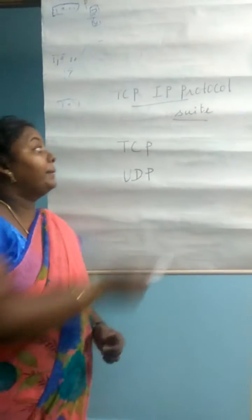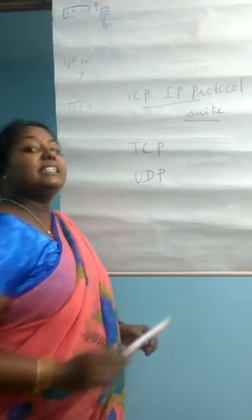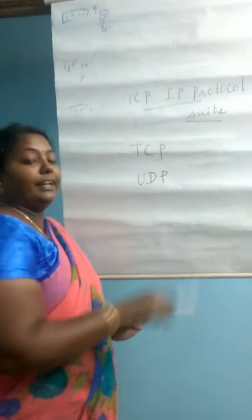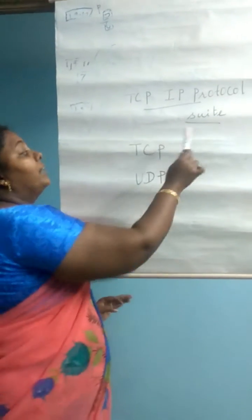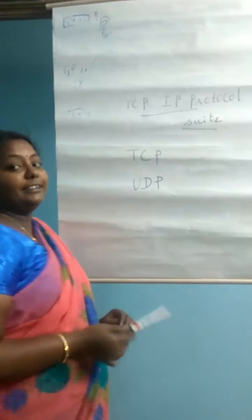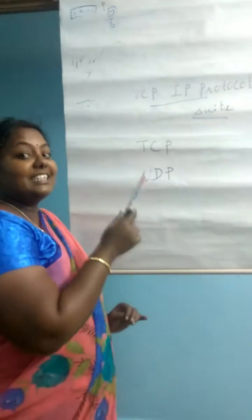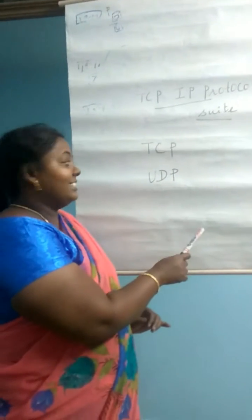About the TCP/IP protocol suite. In the TCP/IP protocol suite we have four layers: application layer, transport layer, internet layer, and network interface layer.